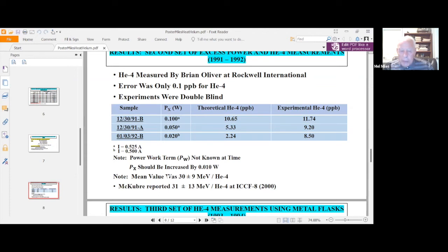From this data, the most accurate helium-4 measurements we ever did, had or had done by Brian Oliver, we calculated the mean value of energy for helium-4, 30 plus or minus 9 million electron volts per helium-4. McCubrey later reported something similar to ICCF in 2000, 31 plus or minus 13 MeV per helium-4.